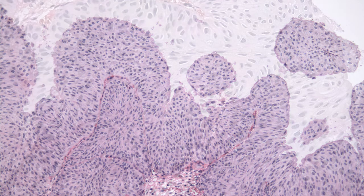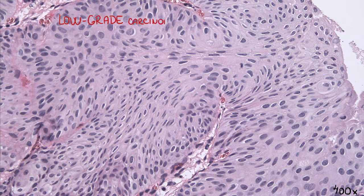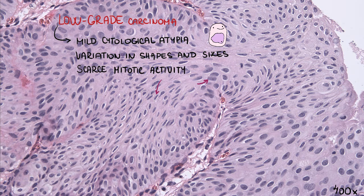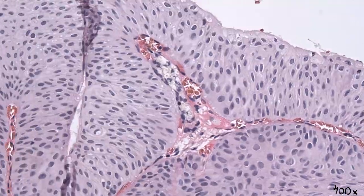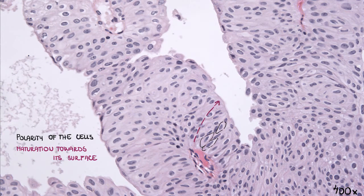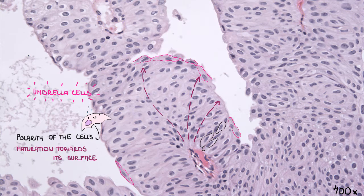In the case of low-grade carcinoma, the cells show mild cytological atypia, certain variation in shapes and sizes, and scarce mitotic activity. However, the polarity of the cells and the maturation of the epithelium towards its surface is still preserved, although slightly diminished. On the picture, you can even appreciate some umbrella cells.